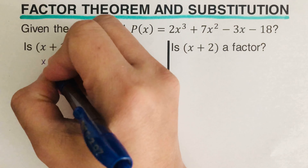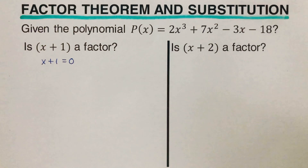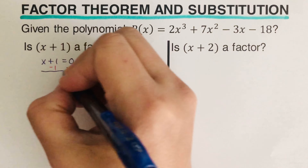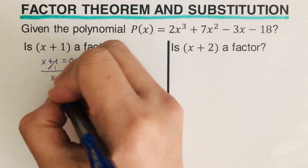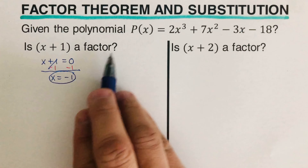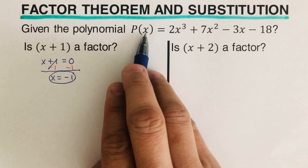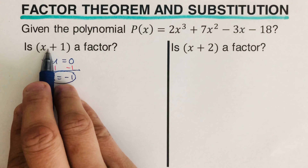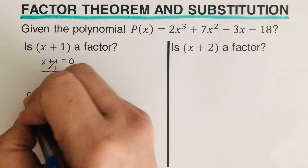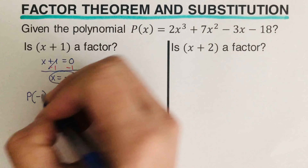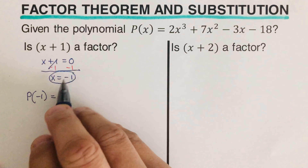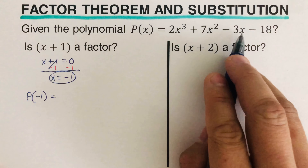So, x plus one equals zero. We subtract one from both sides, giving us x equals negative one. This negative one is the value we plug in to test if x plus one is a factor. So we set this up as p of negative one, plugging negative one into each of the x's.